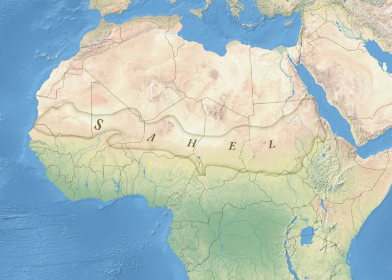The name is derived from the Arabic word Sahil, meaning 'coast' or 'shore', in a figurative sense in reference to the southern edge of the vast Sahara, while the name in Swahili means 'coastal dweller' in a literal sense.